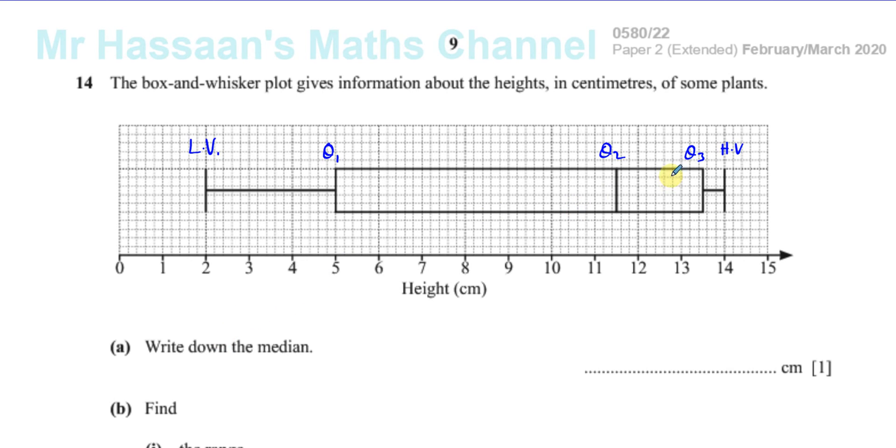So if they say write down the median, we've got to find what the value of Q2 is. So it's about here. So we've got to work out what that point is. Now, this is 11, this is 12. It looks like it's 0.2 each one. 0.2, 0.4, 0.6, 0.8. Yes, it is. So that's going to be 11.5. So 11.5 centimeters is the median.